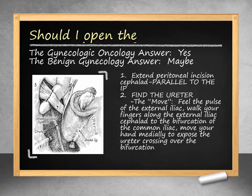We now have easy access to the retroperitoneum. Entry into the retroperitoneum allows easy identification of the ureter as well as access to the pelvic lymph nodes. Thus, it is almost always done in cases of pelvic malignancy. In the benign setting, surgeons may opt not to open the retroperitoneum. After incising the round ligament, the peritoneum is further incised parallel to the infundibulopelvic ligament and extended cephalad.